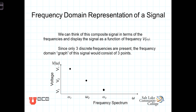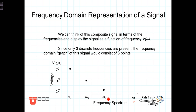It can be particularly productive to think of this time domain signal in terms of its frequency components. Because there are three different frequencies added together, in the frequency domain that represents three discrete points along the frequency axis. We have three different frequencies — ω1, ω2, and ω3 — with amplitudes v1, v2, and v3 respectively. So, looking along the omega axis, this function consists of only three discrete frequencies: ω1, ω2, and ω3.